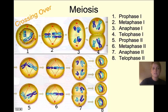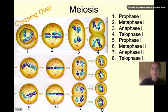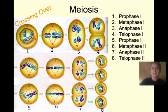In Metaphase I, the sister chromatids are lining up on the metaphase plate — very similar to mitosis. In Anaphase I, they're being pulled to either side of the cell, but if you take a closer look, they haven't been pulled apart yet. They're still together, which is a little different from mitosis — the sister chromatids haven't been fully separated yet.